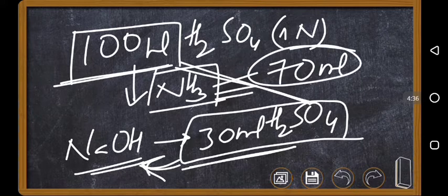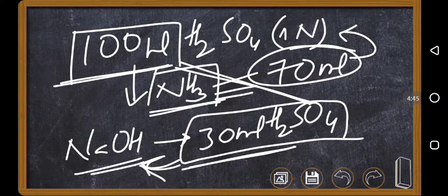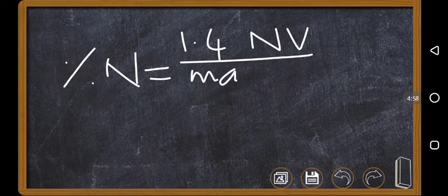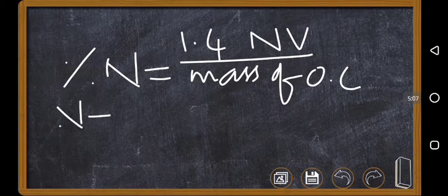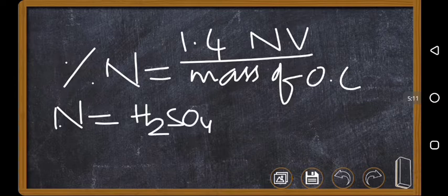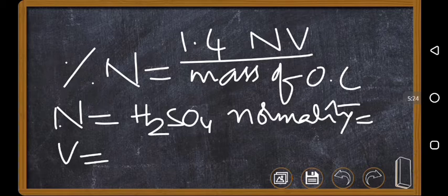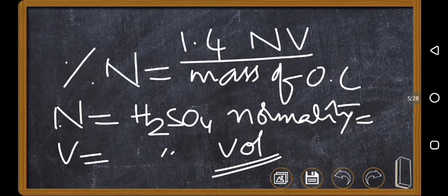So 70 ml of H₂SO₄ was used for the neutralization of ammonia. Now apply the formula: percentage of nitrogen = 1.4 × N × V / mass of organic compound, where N is the normality of H₂SO₄. If molarity is given, double it because H₂SO₄ is a dibasic acid. V is the volume of H₂SO₄ used for ammonia, i.e., the initial volume minus the volume used to neutralize sodium hydroxide.